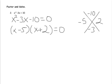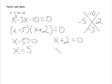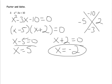With reverse foil, it's very quick. So, now what I have is x minus 5 equals 0, and x plus 2 equals 0. We get x equals 5, and x equals negative 2. And these are my two solutions.